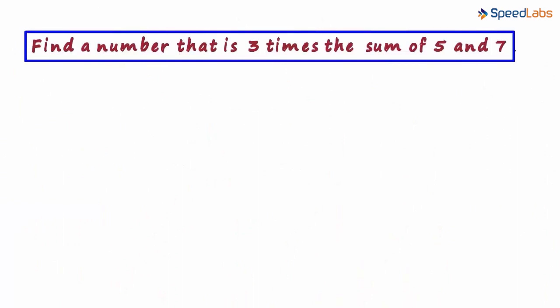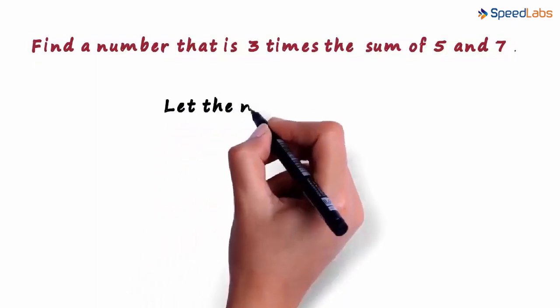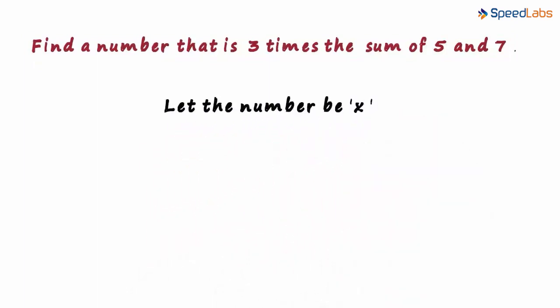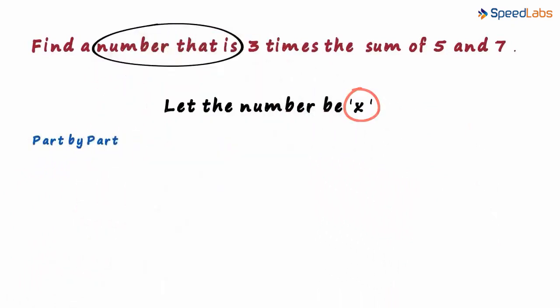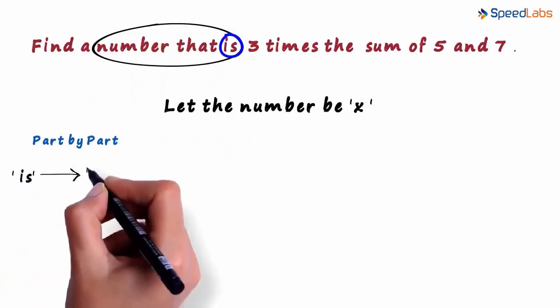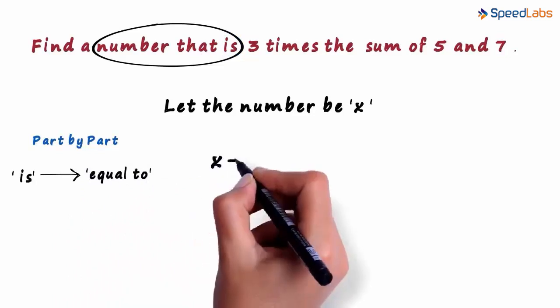Find a number that is 3 times the sum of 5 and 7. We have to find some number. Let that number be x. Now we follow a part by part approach. A number that is: a number is x and the word is always means equal to. So the words the number that is can be written as x equal to.